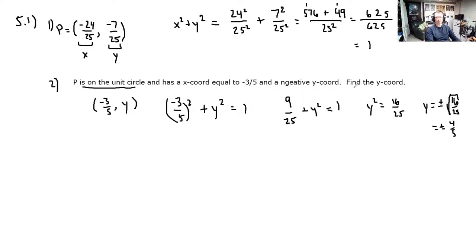So which one is it? Is it either plus 4 5ths or negative 4 5ths? Well, we're told that it has a negative y-coordinate. So it's negative 4 5ths. There you go. That's question 2.